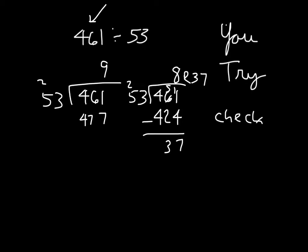Here is the check. We take our divisor, which was 53, multiply it back by our answer, which was 8. 8 times 5 is 40, plus 2 is 42. And then we add back in our remainder, which was 37.